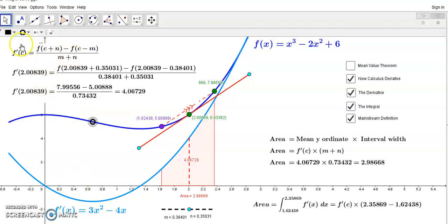So, this here is a very simple explanation of the relationship in the new calculus between the derivative definition, which is this, and the integral definition, which is this. And it's a lot simpler than the nonsense that you find in mainstream calculus.